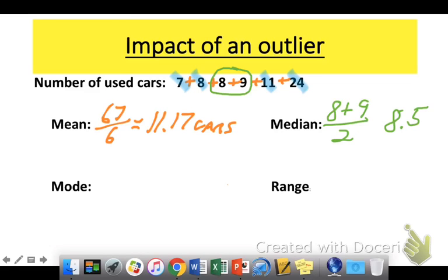Now the mode. Well, the mode is still 8. So the outlier didn't have an impact on the mode at all. But the range is a little bit more spread out. It's a bigger number. It's 24 minus 7, so the range is now 17 cars. So you can see the impact of an outlier.